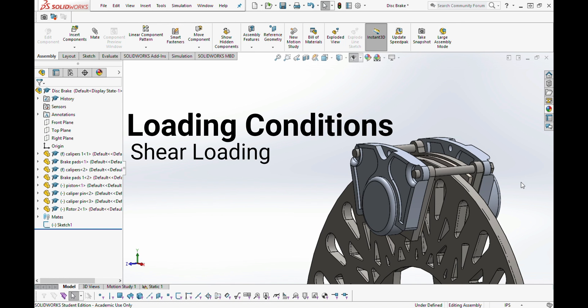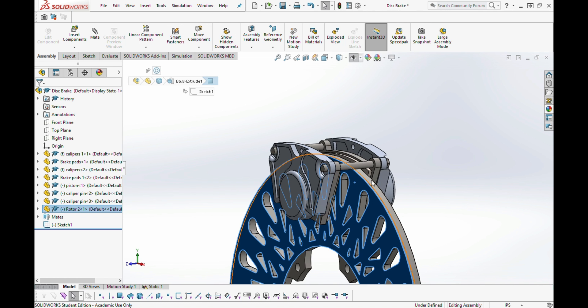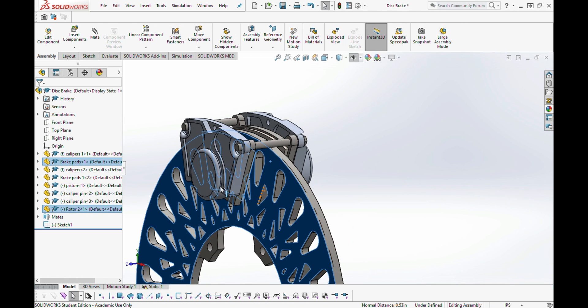One of the two main loading conditions on a disc brake is shearing. This is due to the surface of the rotor coming in contact with the surface of the brake pad, as indicated.